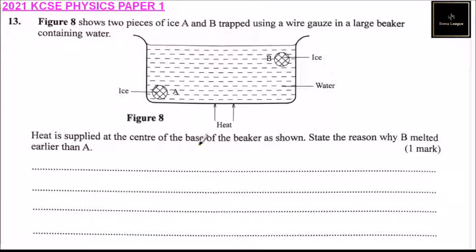So the reason why B melted earlier than A is because when water is heated here, it becomes less dense. So currents are formed and it moves to the top and the cooler water on top comes down. So B is going to experience the heated water before A. And that's why ice B melted earlier than A.